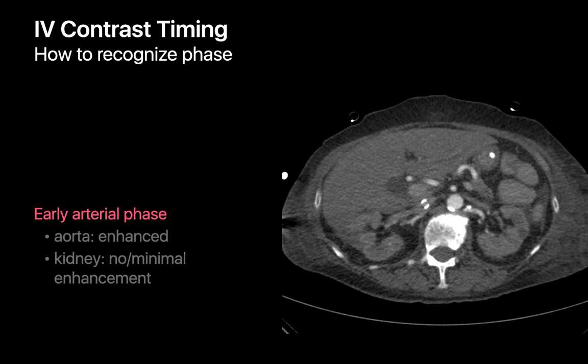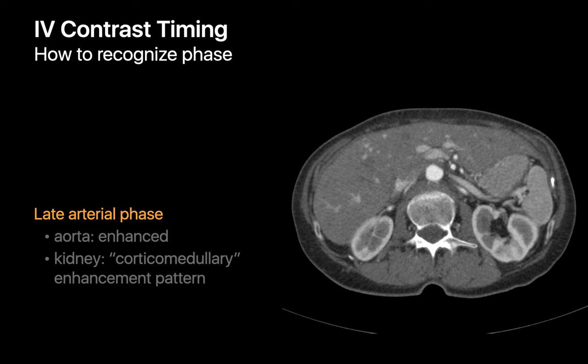If the aorta is enhanced but there's minimal or no enhancement of the kidneys, you're looking at an early arterial phase scan. If the aorta is enhanced and you see a corticomedullary enhancement pattern within the kidneys, you're looking at a late arterial phase scan. Since renal malignancies can sometimes get masked by the renal corticomedullary enhancement pattern during the late arterial phase, this is not such a good phase to be looking at if you're concerned about a renal malignancy.